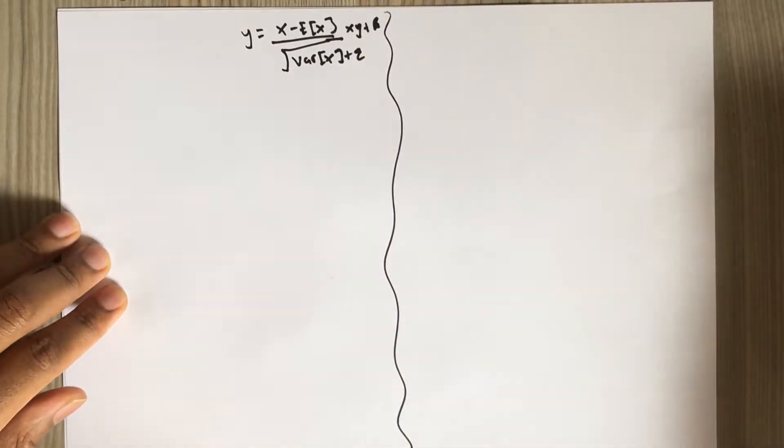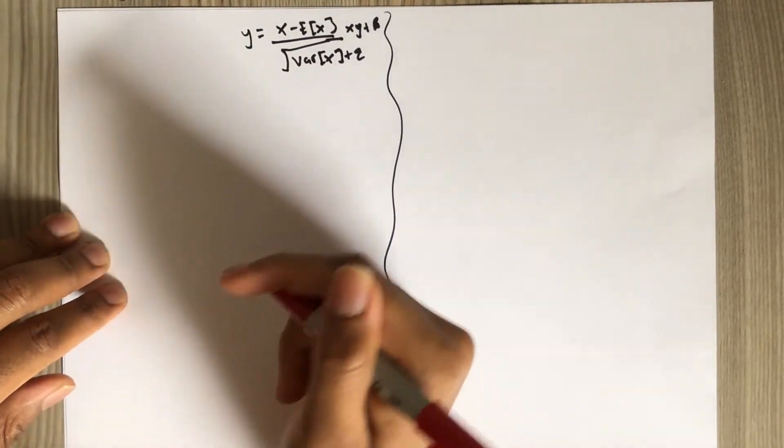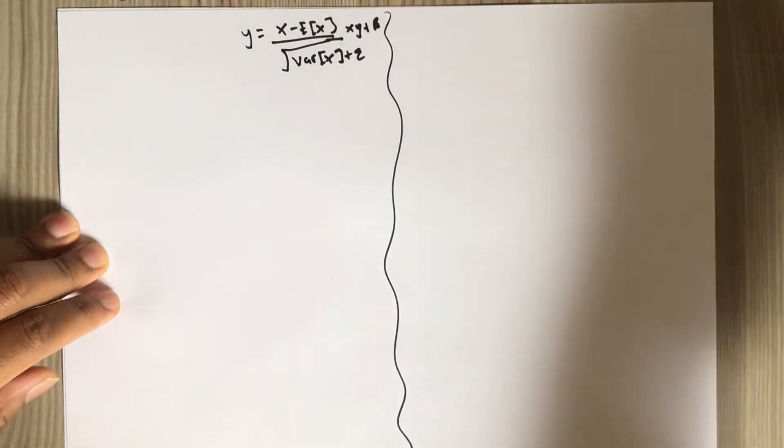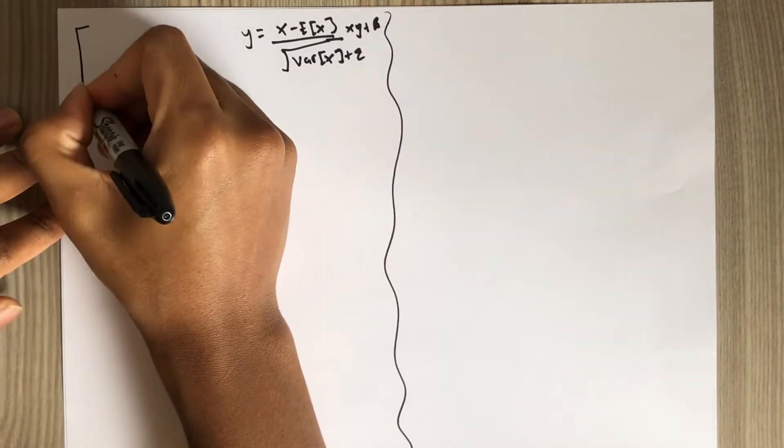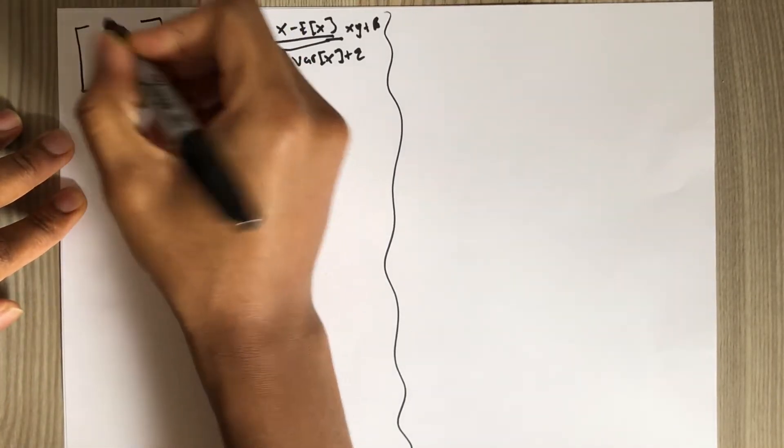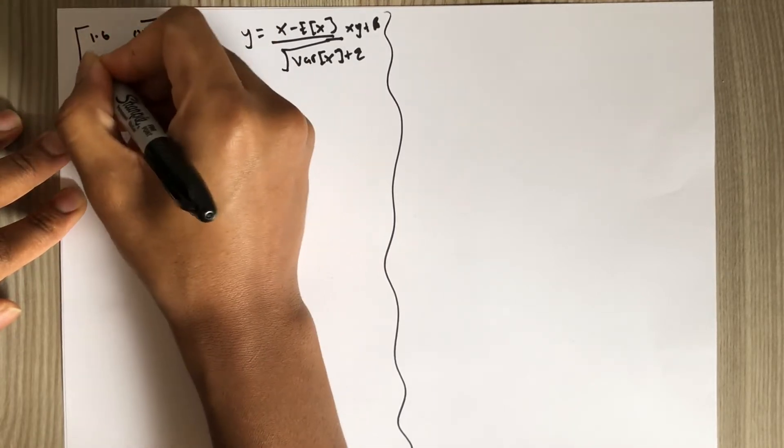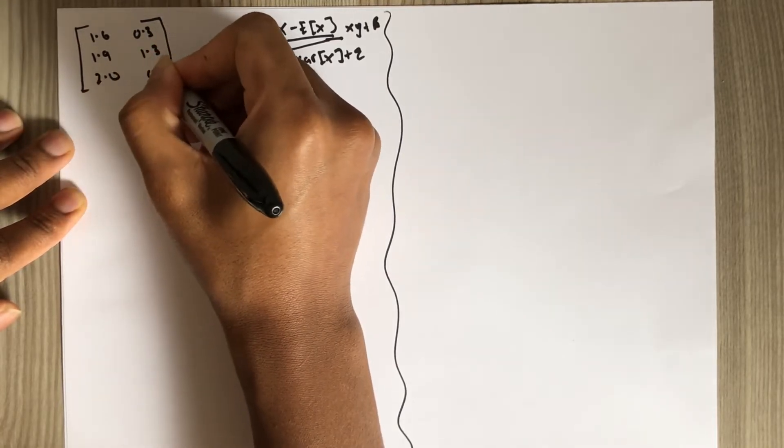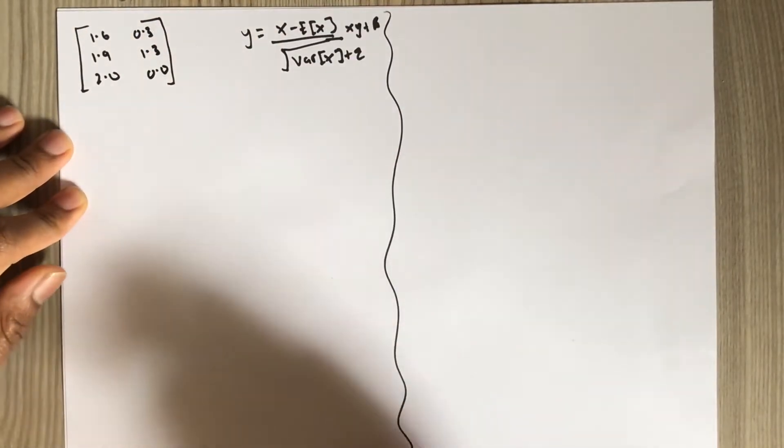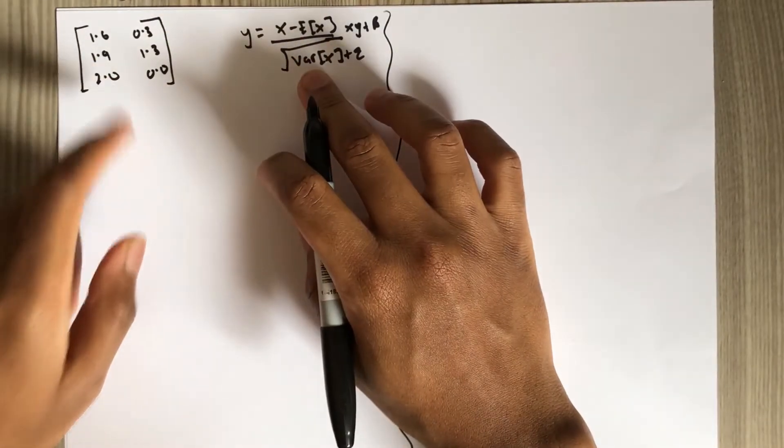I will show you the difference between this and batch normalization. So the data that comes out of the self-attention was this 1.6, 0.3, 1.9. So we will use this formula on this data.